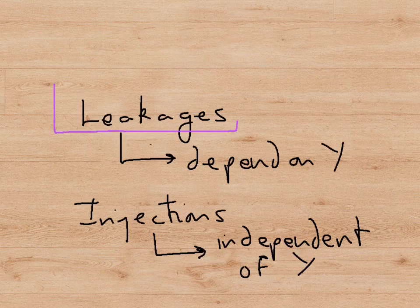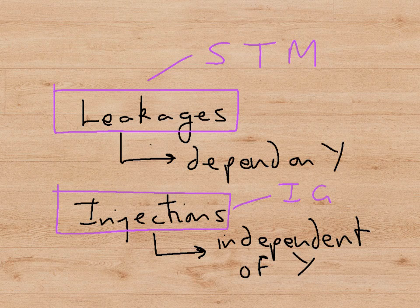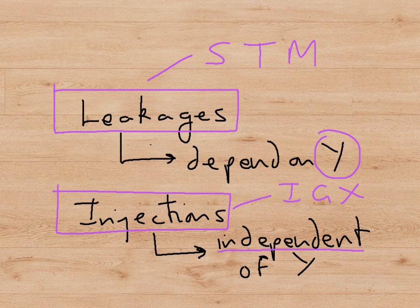So now we have identified three leakages and three injections. The leakages are savings, taxation, and imports. The injections are investment spending, government spending, and export spending. It's important to realize that the leakages actually depend on the level of national income, whereas the injections are completely independent of national income.